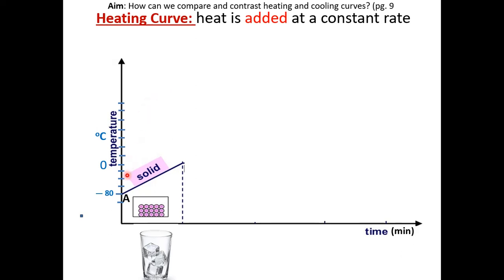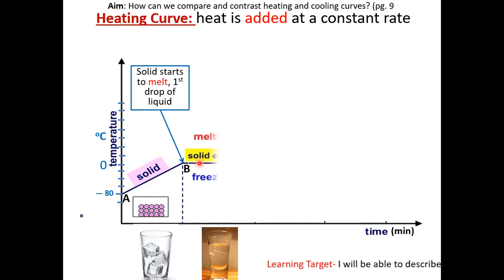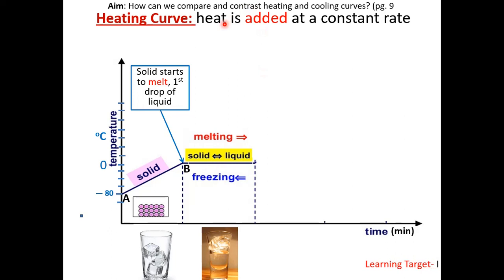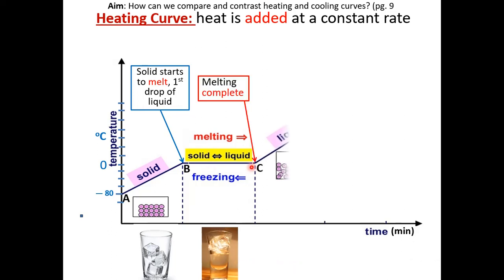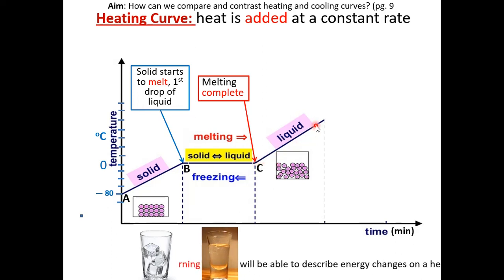In this heating curve, the substance starts out in the solid phase. As we add heat at a constant rate, the temperature increases until you reach a phase change. This phase change is known as melting. During melting, two phases — solid and liquid — exist at the same time. Notice that the temperature is constant during melting. The energy being added at a constant rate is being used to break the intermolecular forces rather than raise the temperature. Eventually, all the solid melts and becomes a liquid. This line segment only has the liquid phase.